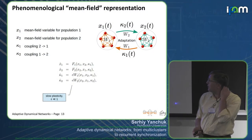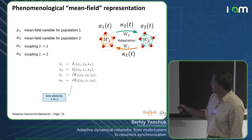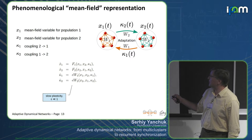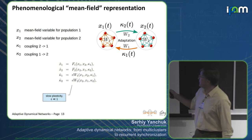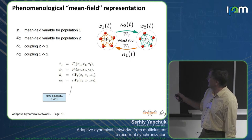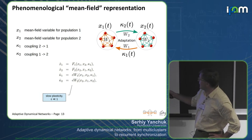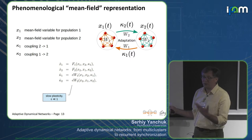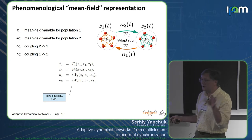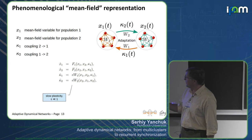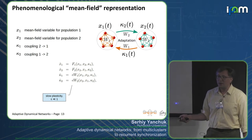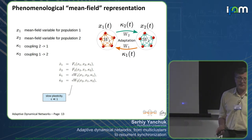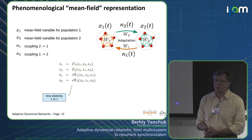In a phenomenological mean-field representation, we have one oscillator or one population described by state variable x1, another by x2. Additionally, in adaptive networks we have coupling weights kappa_1 and kappa_2 changing in time according to certain adaptation rules. This setup is written as a general system of four ODEs: dynamics of first population, dynamics of second population, and equations for kappa_1 and kappa_2. I only assume that the dynamics of coupling weights is slow, proportional to epsilon. We can then assume the fast system — for fixed kappa_1, kappa_2 — is synchronized in one region and asynchronous in another.